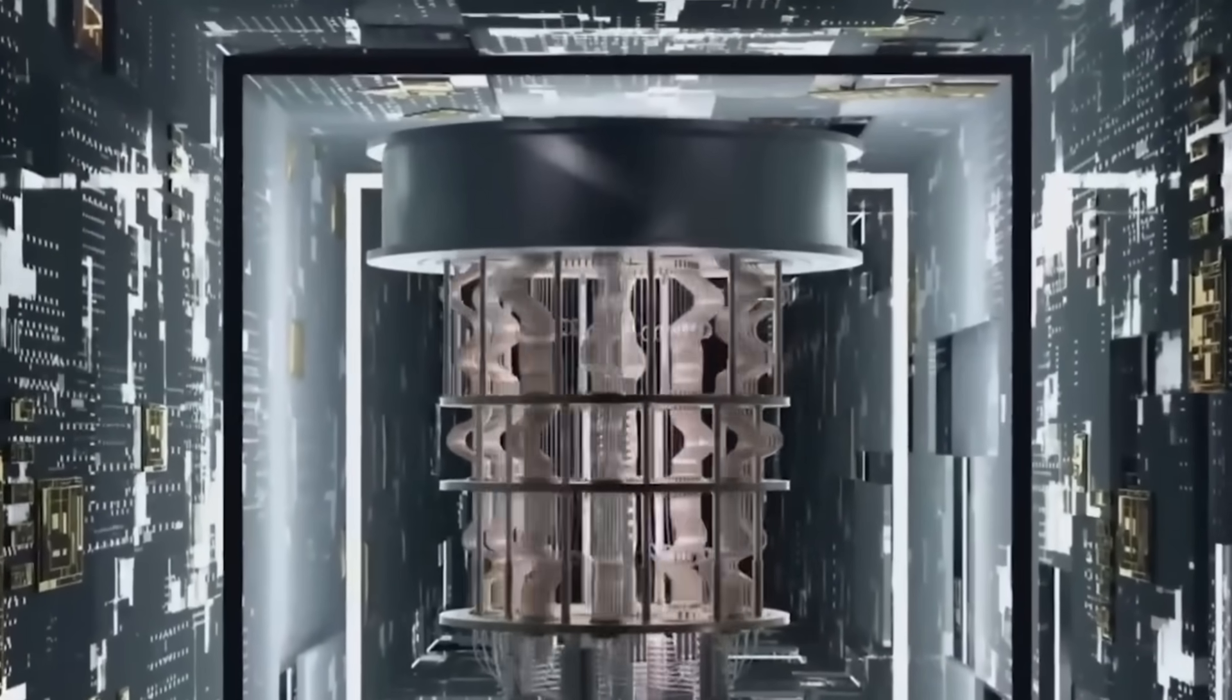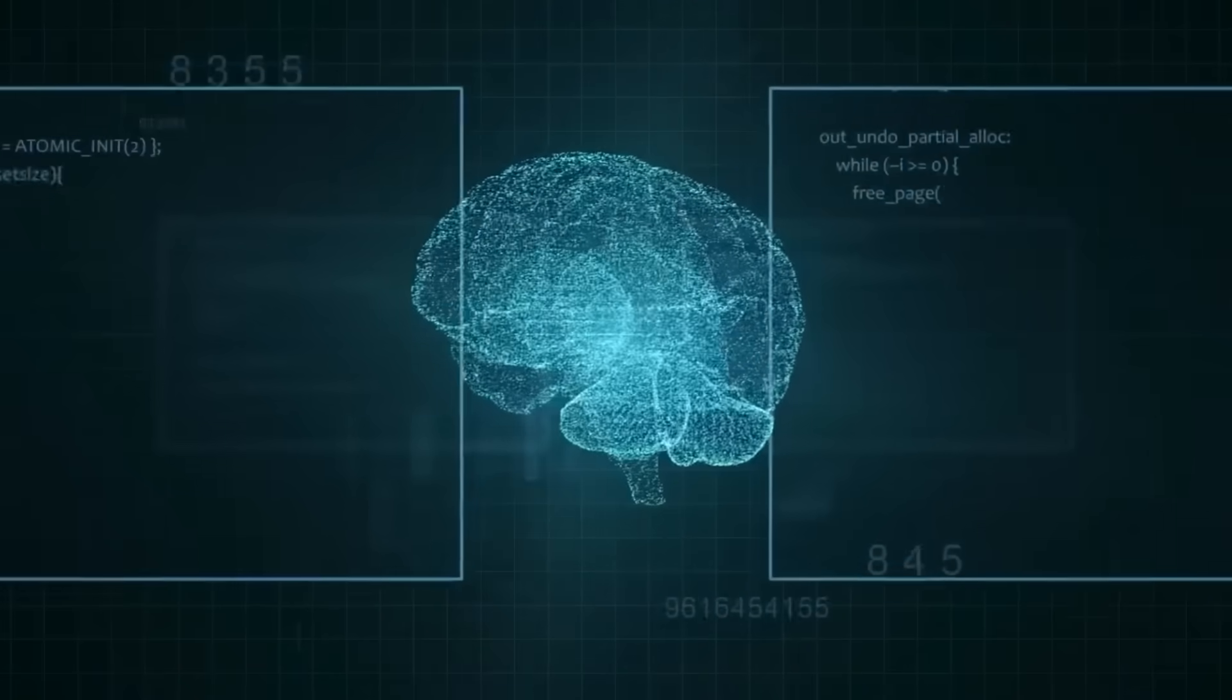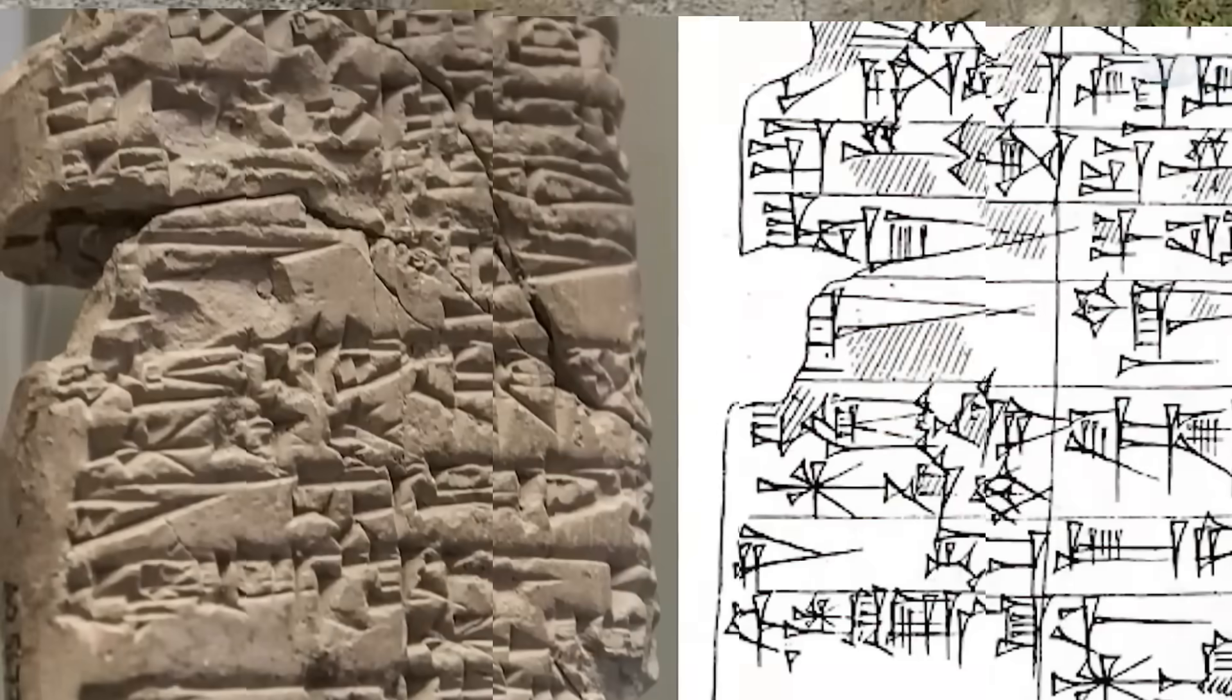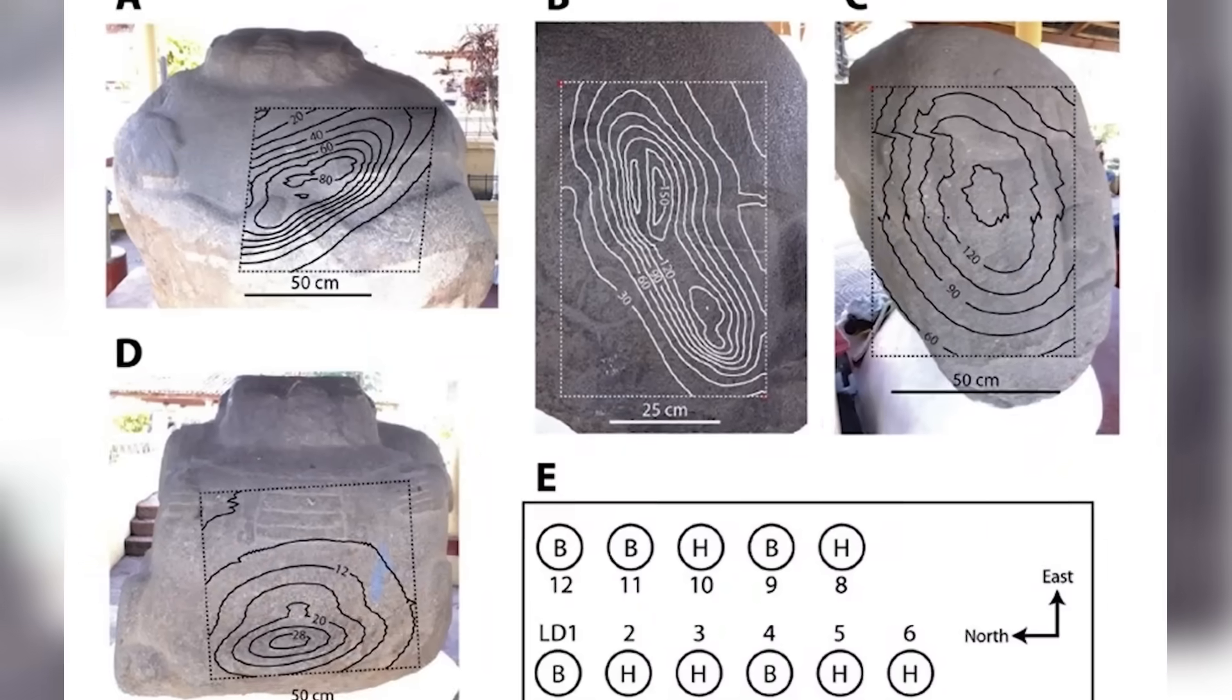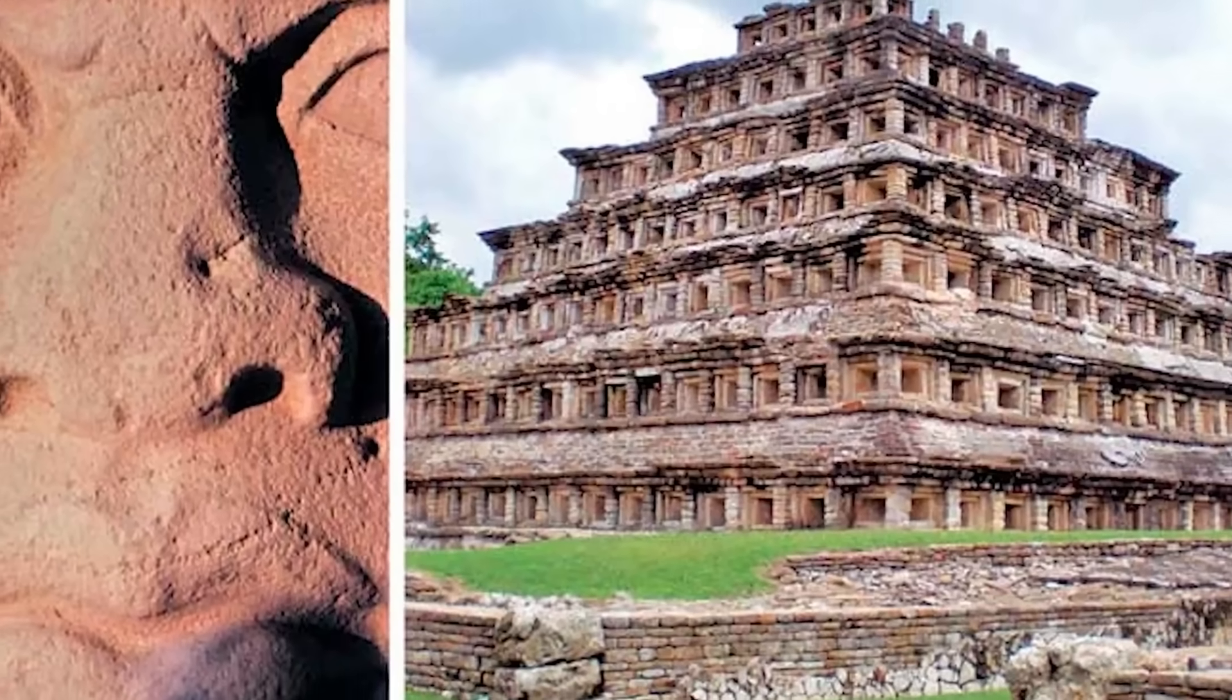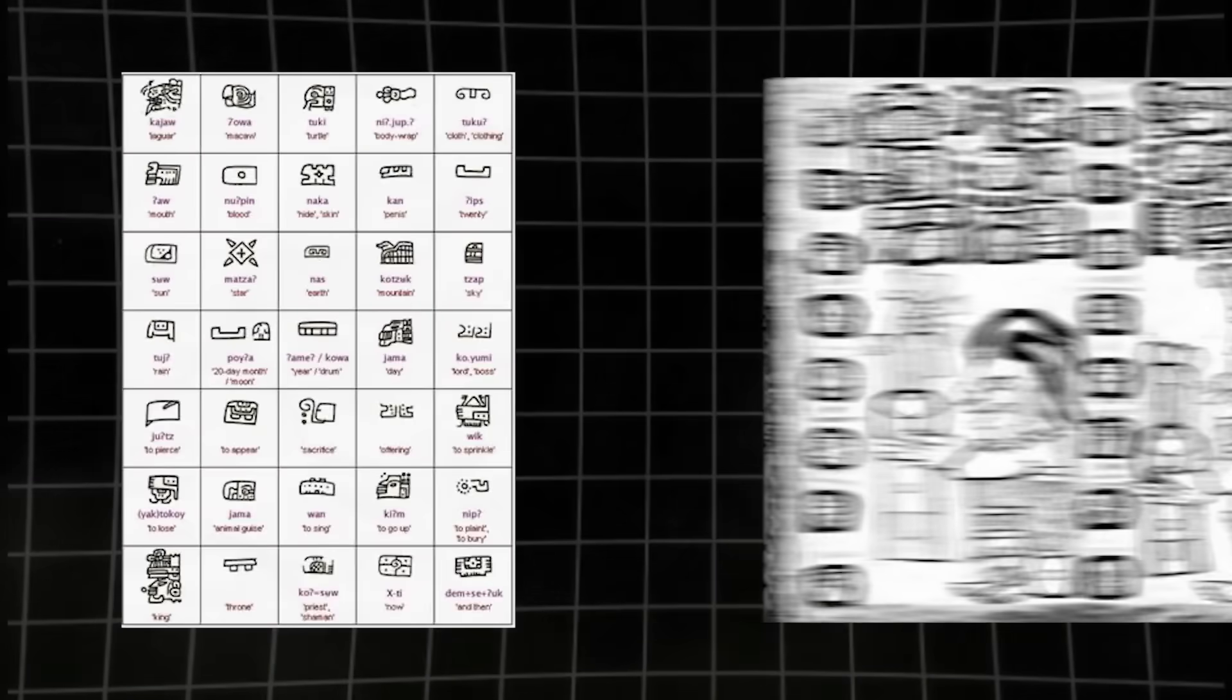But then something changed. The AI flagged a sequence of glyphs that broke every pattern. Where previous segments described offerings being given, these symbols suggested something was responding, accepting, speaking back. The alleged translation sent chills through the research team. The maize is received. The jade gleams in my sight. I accept this blood. The text claimed something was answering.